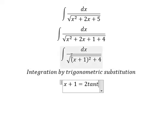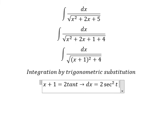And after that, we simplify the square root and dx. We do first derivative for both sides. We have 2 sec² t dt.